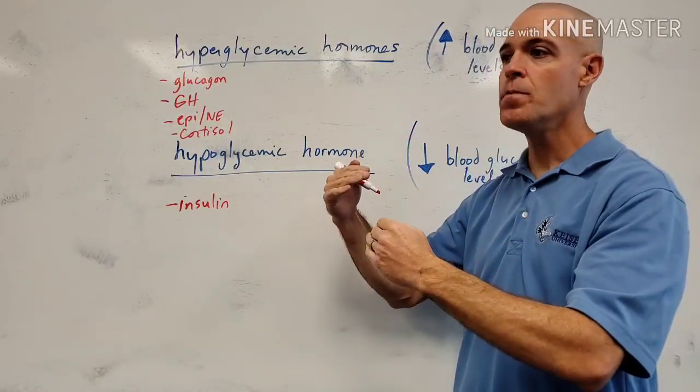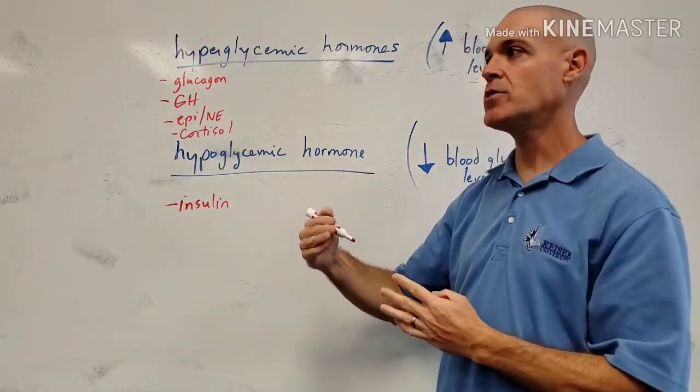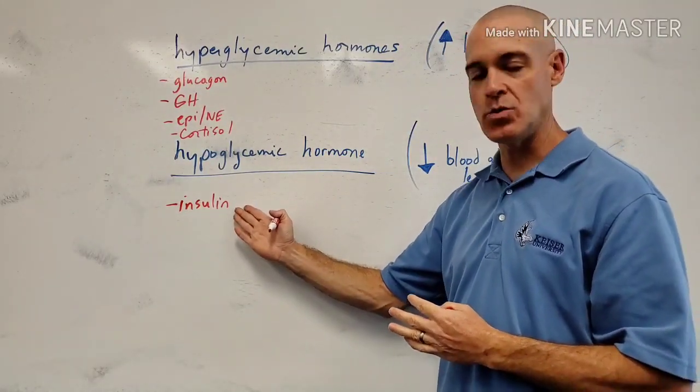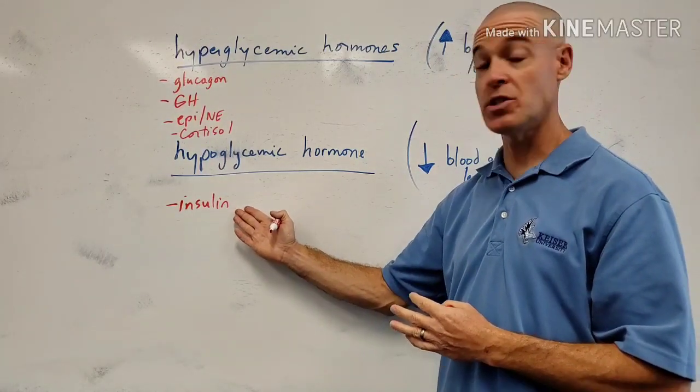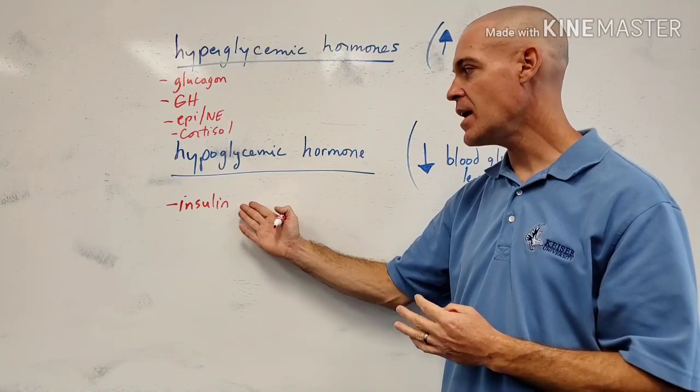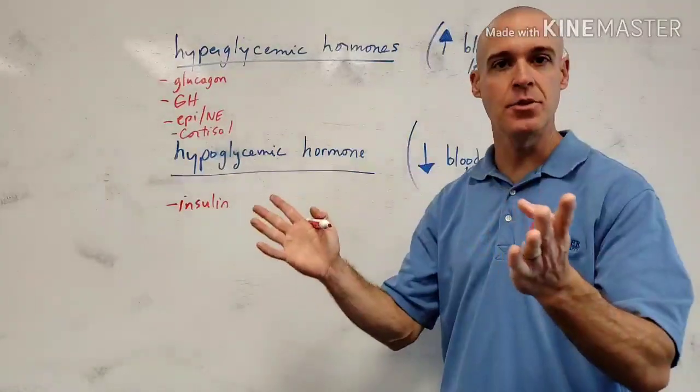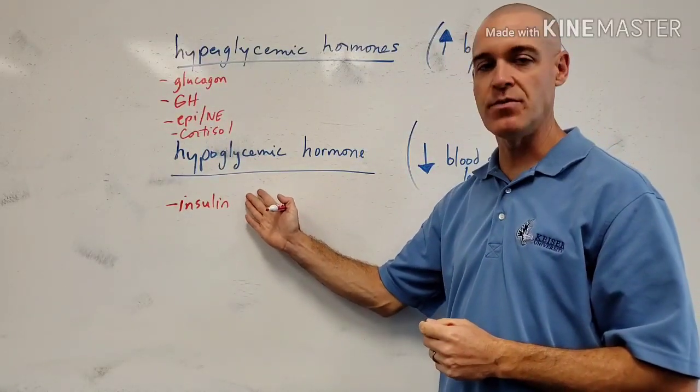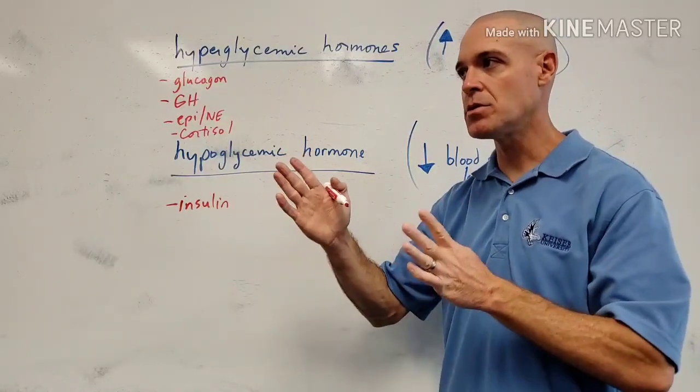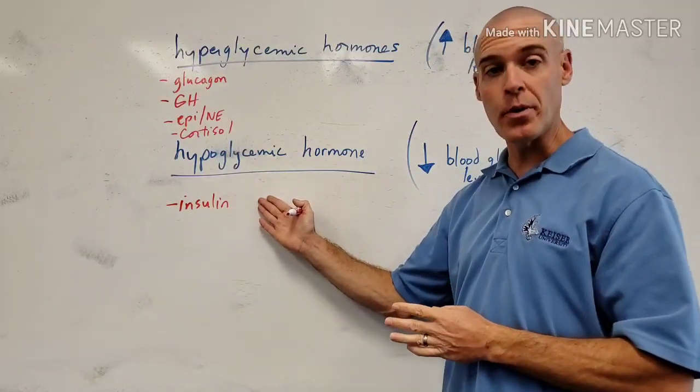But when we get into obesity and poor diet, lack of exercise, insulin receptors can become oversaturated and resistant to insulin. And we call that type 2 diabetes. Obviously, it's a very common problem. In fact, that is the most common metabolic disease in the world.